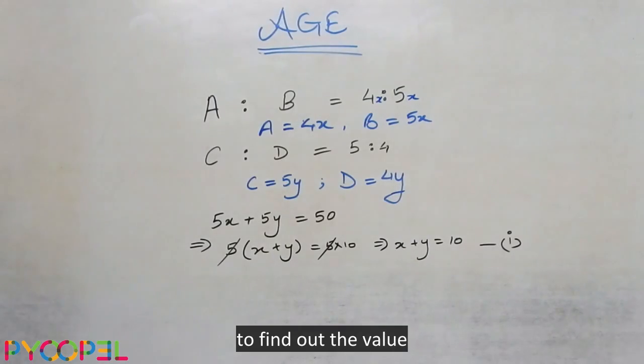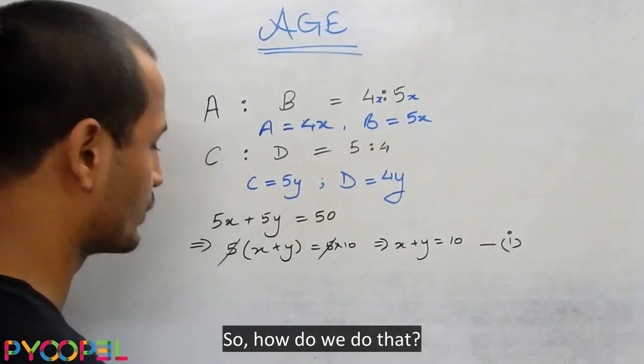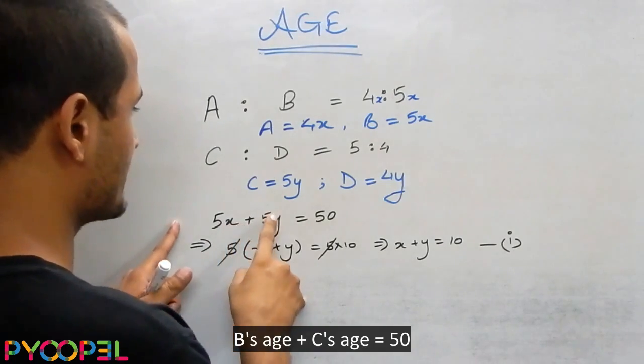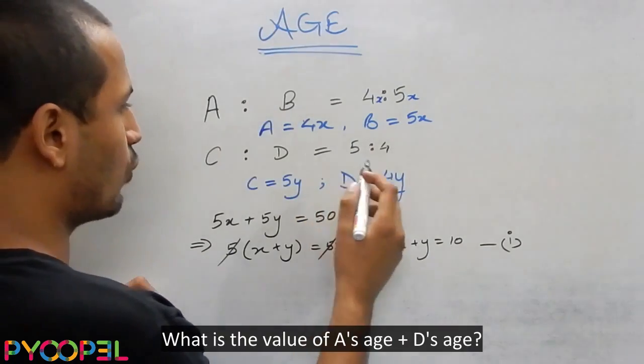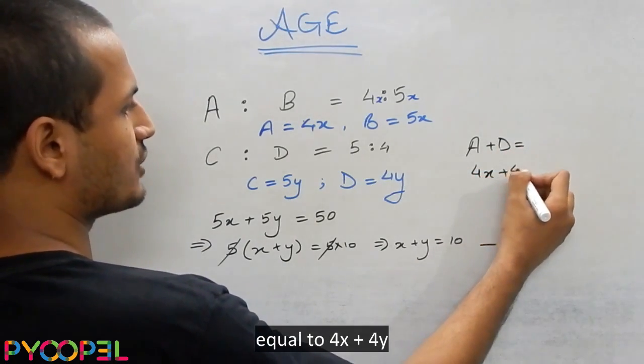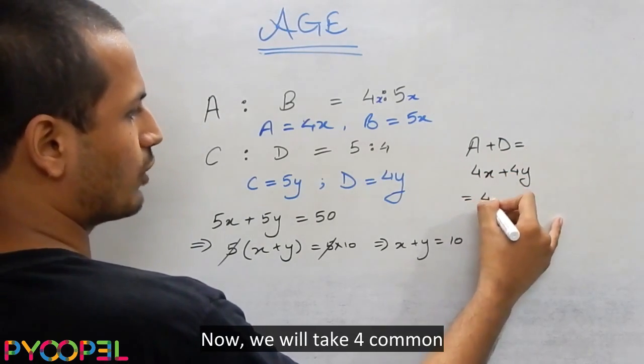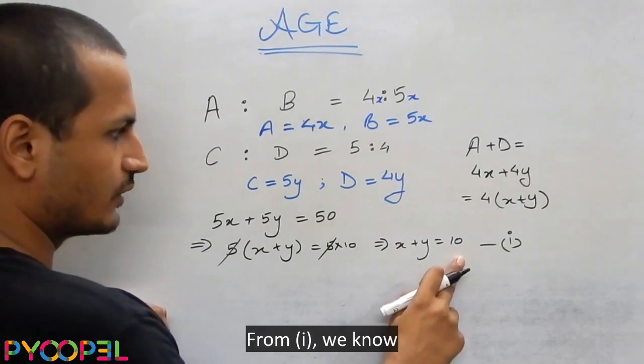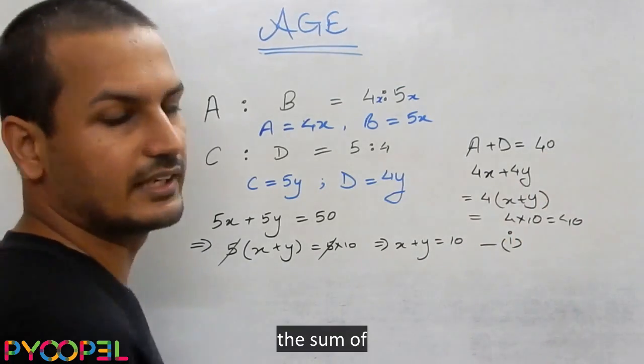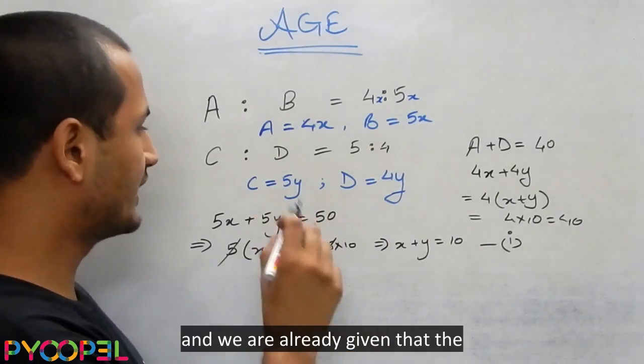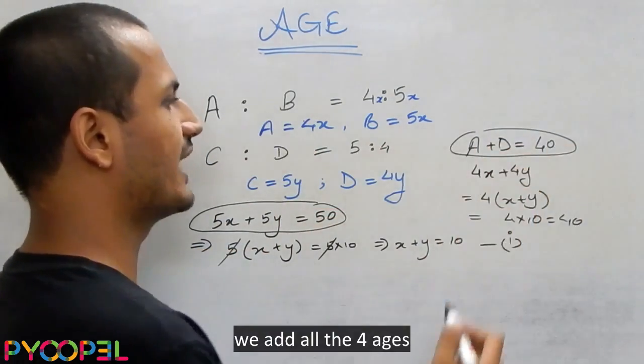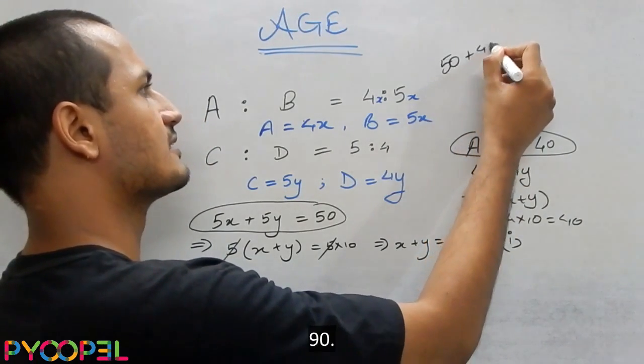Now we have to find out the value of A plus B plus C plus D. We have done B's age plus C's age is equal to 50. What is the value of A's age plus D's age? This will be equal to 4x plus 4y. We take 4 common, so we have 4 into x plus y. From equation 1 we know x plus y is equal to 10, so we put 4 into 10 equal to 40. That is the sum of A's age and D's age is 40, and we are already given that the sum of B's age and C's age is 50. Thus we add all the 4 ages and we get the answer as 90.